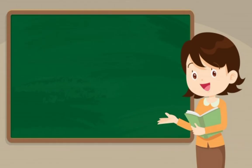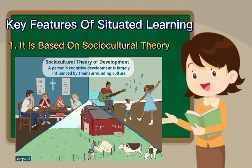Key features of situated learning. Number one, it is based on sociocultural theory. Situated learning theory embraces a sociocultural view of learning and sees knowledge as being defined and agreed upon by society or community. For example, if you want to learn how to be a doctor, learn from doctors — you never learn on your own. If you want to learn how to fix cars, spend time with a mechanic. This view of learning as social is juxtaposed to cognitive constructivism theory, which believes knowledge can be learned from logic and discovery alone. According to situated learning theory, to become an effective practitioner, you need to know how your community uses knowledge.